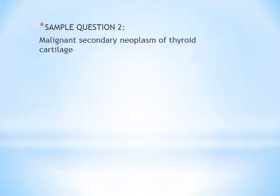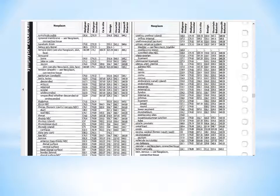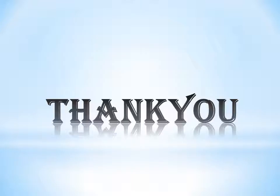Next question: malignant secondary neoplasm of thyroid cartilage. The structure affected is cartilage, specifically thyroid cartilage. You can either go to cartilage and look for thyroid, or go directly to thyroid where you can see thyroid gland and below that thyroid cartilage. The type of neoplasm is malignant secondary, which is the second type, so the code is C78.39. Now you are done with how to take a code from the table of neoplasm. In the next video I will be doing chapter 2 neoplasm and its guidelines.